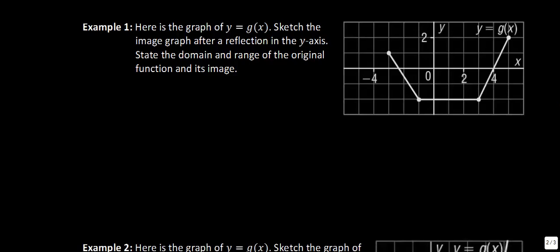Example 1 says: here's the graph of y is equal to g of x — sketch the image graph after reflection in the y-axis, and state the domain and range of the original function and its image. Let's start by reflecting in the y-axis. So if this point is 5 units over, it'll now be 5 units over in the other direction. This one is 3 over, so it'll be 3 over in the other direction. This one is at 1, so it'll be 1 here. Taking them the exact same distance across the y-axis, we'll have a reflected function.